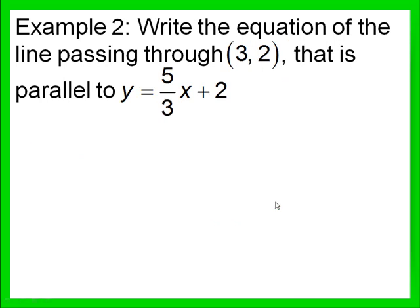Example 2: write the equation of the line passing through the point 3, 2 that is parallel to the line y equals 5 over 3x plus 2. Again, the given equation is in slope-intercept form, so we can read the slope that we need for our line off of the equation. So the slope — the coefficient of x — is 5 over 3. Next, we're going to take our ordered pair 3, 2, remembering the first number is x and the second number is y, and plug into the slope-intercept equation.